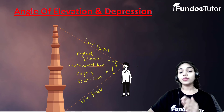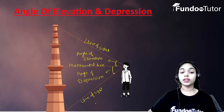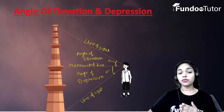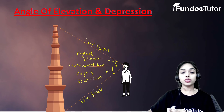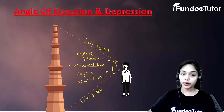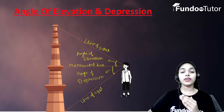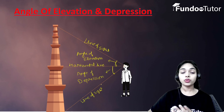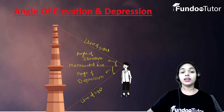When the person is looking down, the angle formed between the horizontal line and the line of sight is called the angle of depression. And when the person is looking up, the angle formed between the line of sight and the horizontal line is called the angle of elevation.